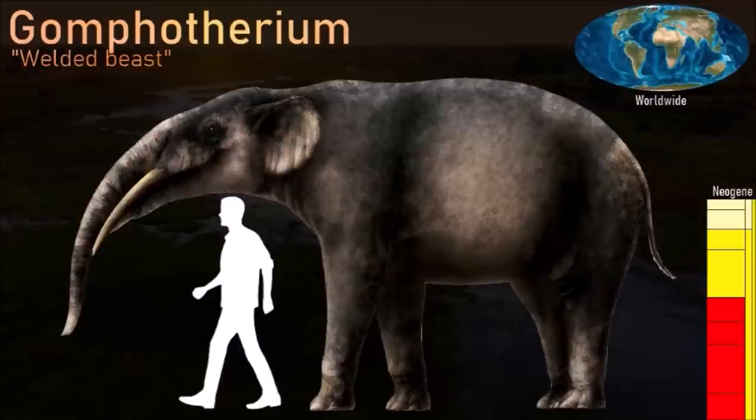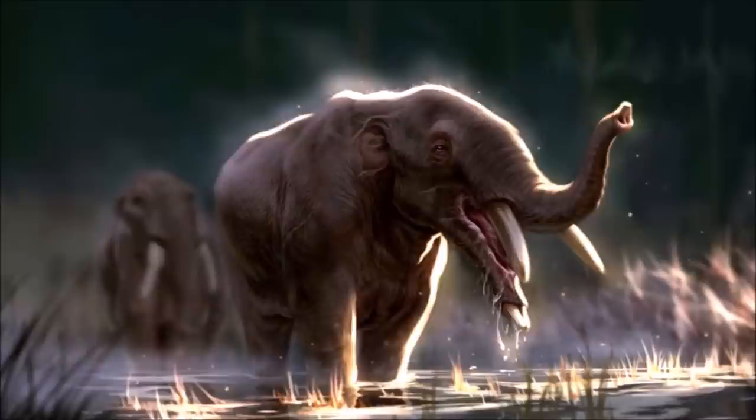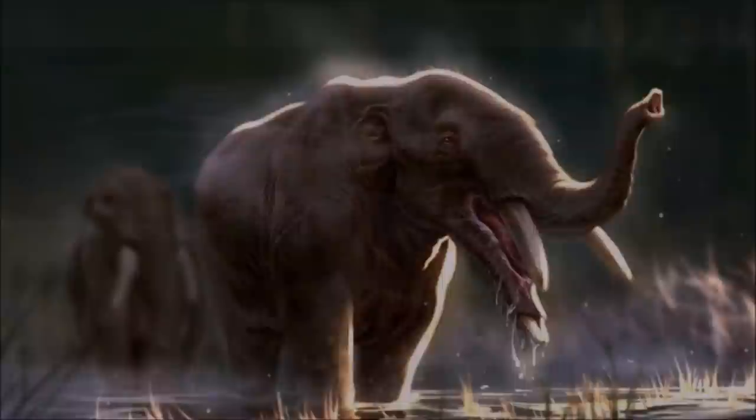This four-tusked mastodont first evolved in Africa during the early Miocene and became the first mastodont to escape its homeland, migrating to Eurasia and North America where it flourished. It was about the size of a small elephant with a long flat skull, a large pair of long upper tusks that extended straight out, and a smaller pair of shovel-shaped tusks that grew out of the lower jaw. These lower tusks were probably used to scrape up vegetation and strip bark and leaves off trees. Gomphotheres were the ancestors from which mammoths evolved during the Neogene.